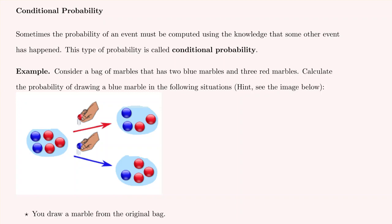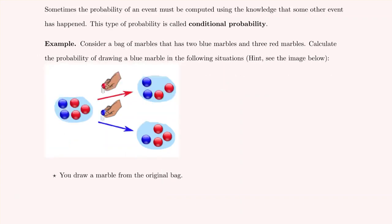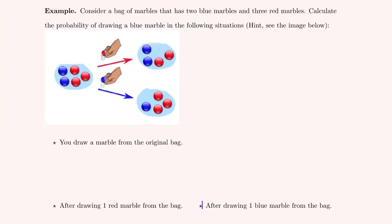In this video we will consider conditional probability. In some circumstances we need to calculate the probability that something has occurred given the knowledge that some other event has already happened. This type of probability is called conditional probability.